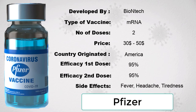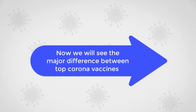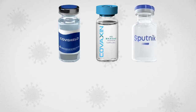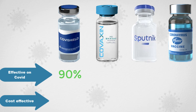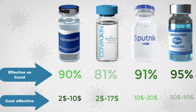People are confused about which vaccine to take, so we will see the differences between the various COVID vaccines currently available. In terms of effectiveness: Covishield is 90% effective, Covaxin is 81% effective, Sputnik V is 91% effective, and Pfizer is 95% effective. So in terms of effectiveness, Pfizer is the most effective vaccine, while Sputnik V is the second most effective.